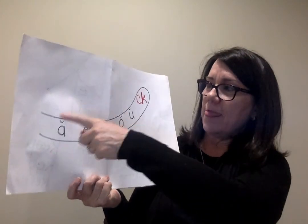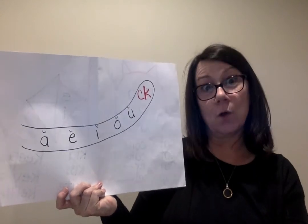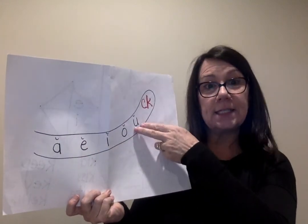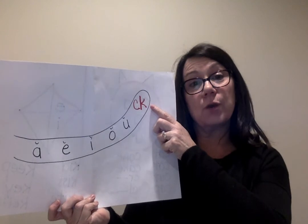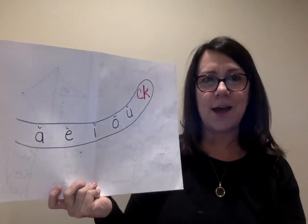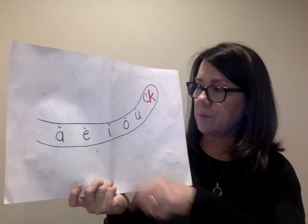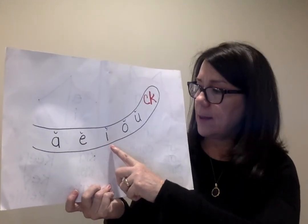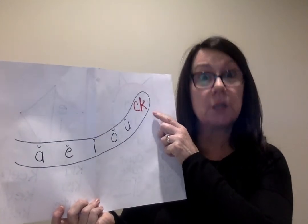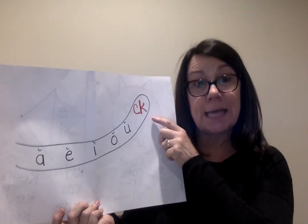But when do you use CK? Now I want you to draw the cat's tail. Write A-E-I-O-U along the cat's tail, and at the end of the tail take your red crayon and write CK. Remember our little smile sign for short vowels. So if you hear a short vowel — A, E, I, O, U — and then you hear K at the end of a word, you know to use CK. CK comes at the end of a word after a short vowel is heard.